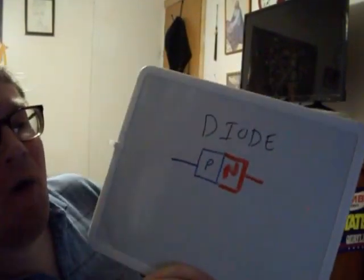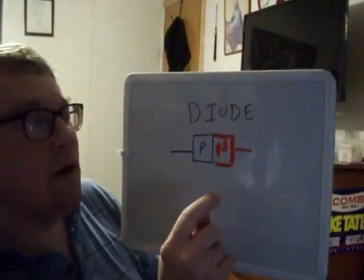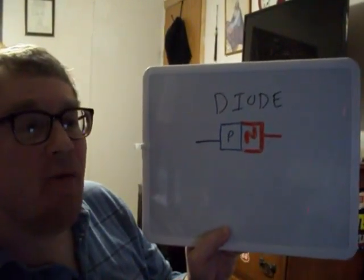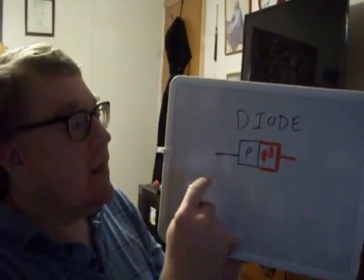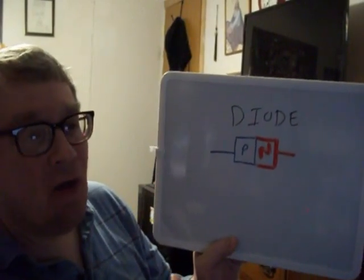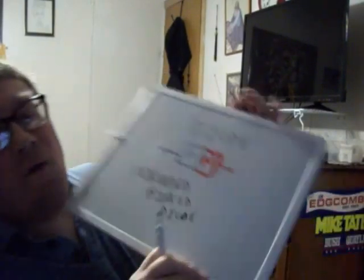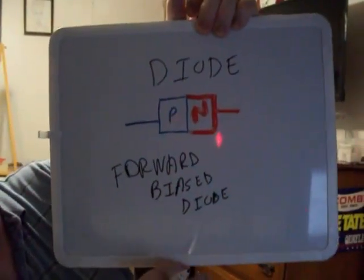When the anode voltage is more positive than the cathode voltage, then the diode is labeled as a forward-biased diode. So when this side is more positive than this side, this is a forward-biased diode. That's what it is.